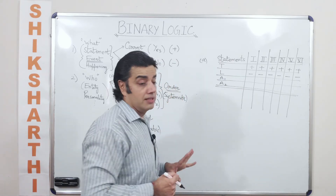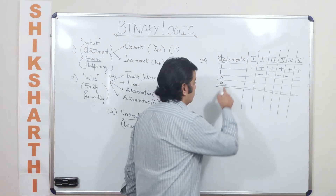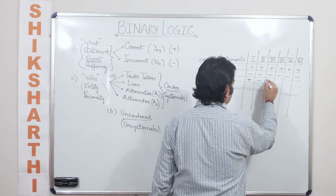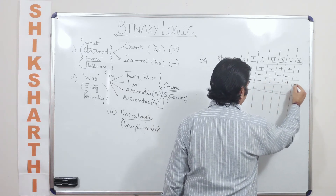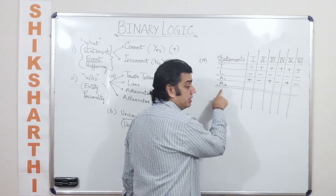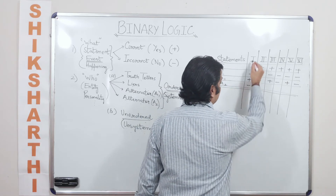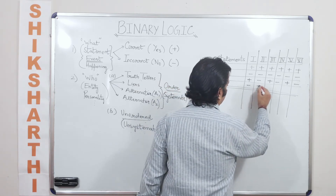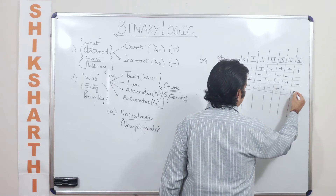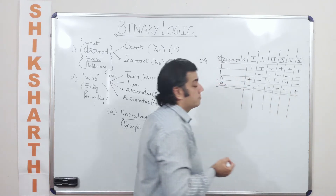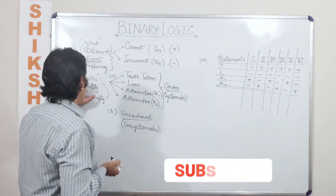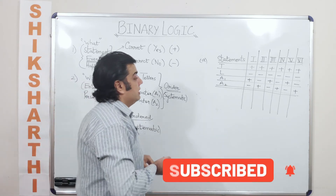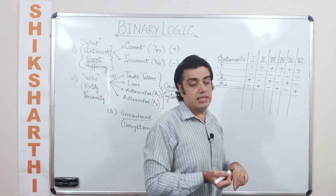An alternator is a combination of correct and incorrect responses. In a systematic order, alternator variety one (A1) would respond: correct, incorrect, correct, incorrect, correct, incorrect (+, −, +, −, +, −). Alternator variety two (A2) starts the other way: incorrect, correct, incorrect, correct, incorrect, correct (−, +, −, +, −, +). This is the entity giving responses to statements that must be answered in terms of yes and no only.